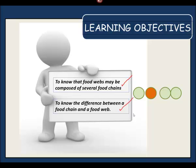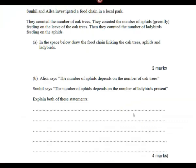Now let's look at an exam question. Sunhill and Elsa investigated a food chain in a local park. They counted the number of oat trees, the number of aphids feeding on the leaves, and the number of ladybirds feeding on the aphids. Draw the food chain linking the oat trees, aphids, and ladybirds. Here is the food chain: oak tree → aphids → ladybirds. If you've got that, give yourself two marks.